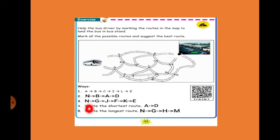Now write the shortest route. What is the shortest route? See here, from A, A to D, and it will go directly. This is the shortest route, A to D. Longest route. From N, N to G, G to H, H to M, and finally it has to go like this. This is the longest route. Like this they will ask the questions.